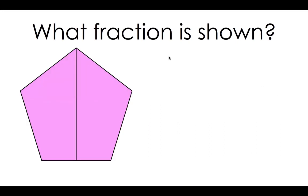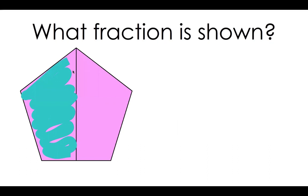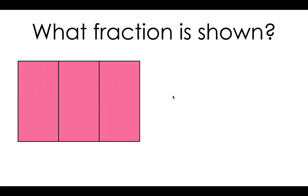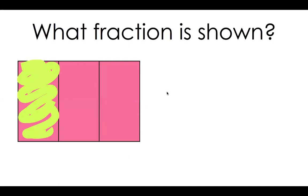What fraction is shown here? Halves — there are two halves. Now if I color in one of the halves, what fraction will be shown? One over two — one half. One out of the two pieces is shaded in. What fraction is shown here? Thirds — we have three pieces. Now if I shade in one piece, what fraction will I show? One third — one out of my three pieces is shaded in.